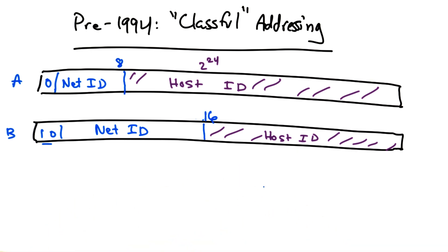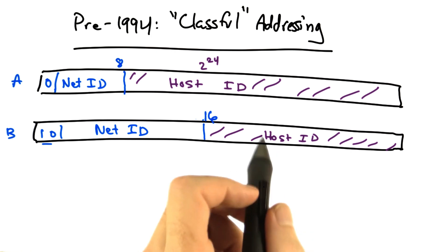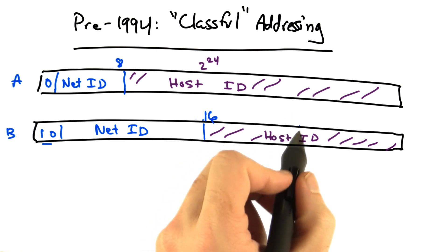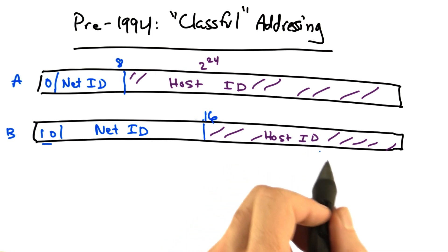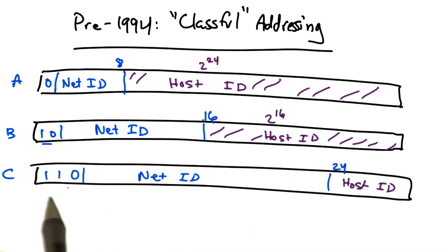we have about 2 to the 14th unique class Bs, each of which can have 2 to the 16th, or 65,000 hosts on each network. Class Cs use the first 24 bits for the net ID, and the remaining 8 for a host ID. So each class C network essentially can only have 255 hosts on it.